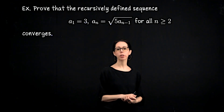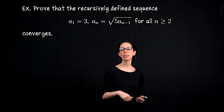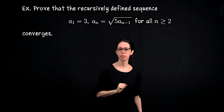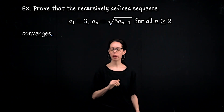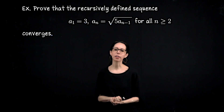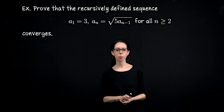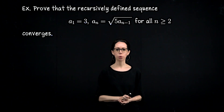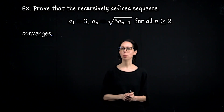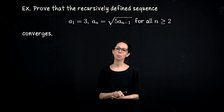One major application of the monotone convergence theorem is proving other theorems, but here's a computational application. Consider the sequence defined recursively as a sub 1 equals 3, and a sub n equals the square root of 5 times a sub n minus 1. So a sub 2 would be the square root of 15, and so on. I'm going to prove it's bounded first, then prove it's monotone increasing. Once we have those two properties we can apply MCT to know it converges, and then compute the limit.